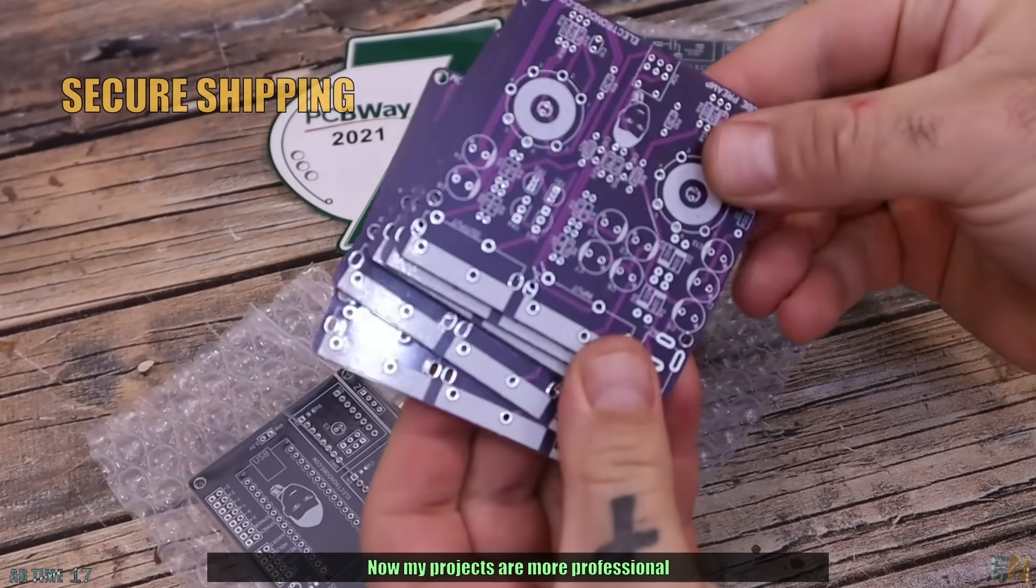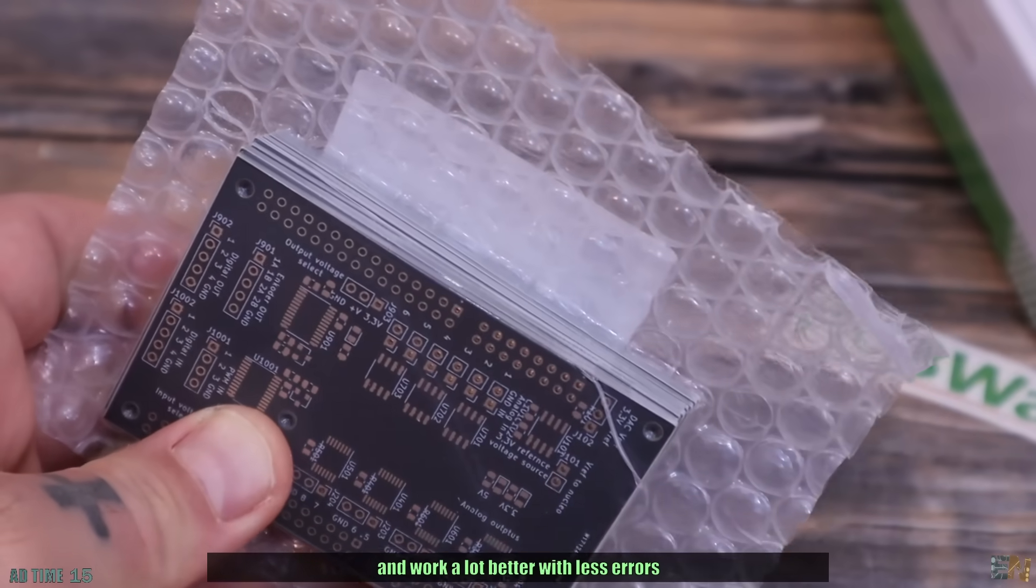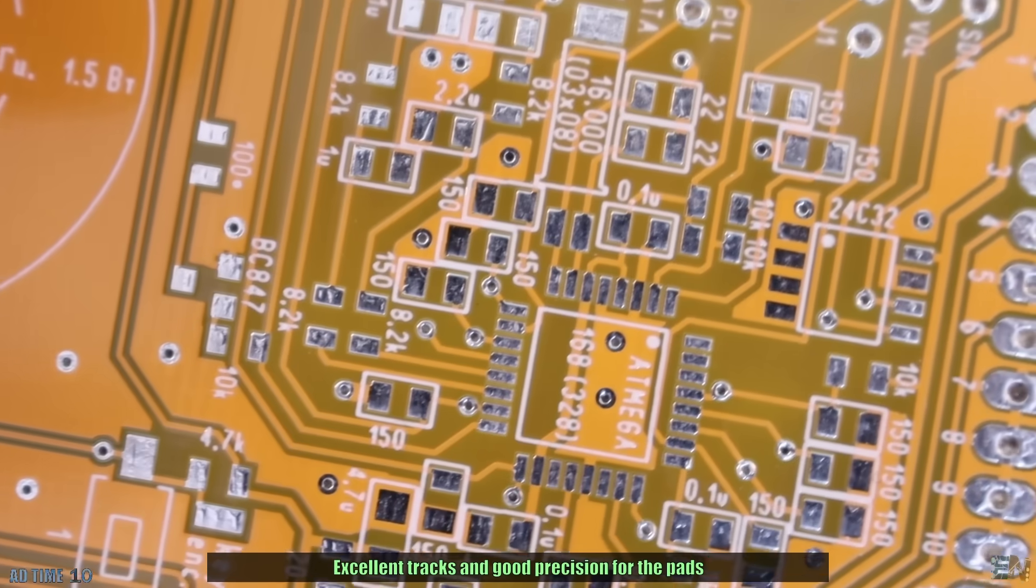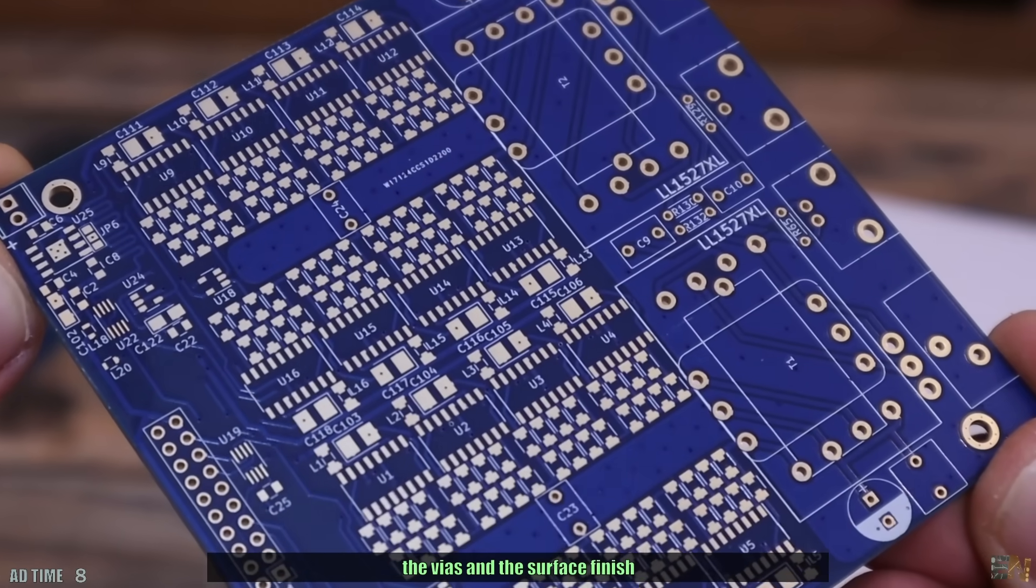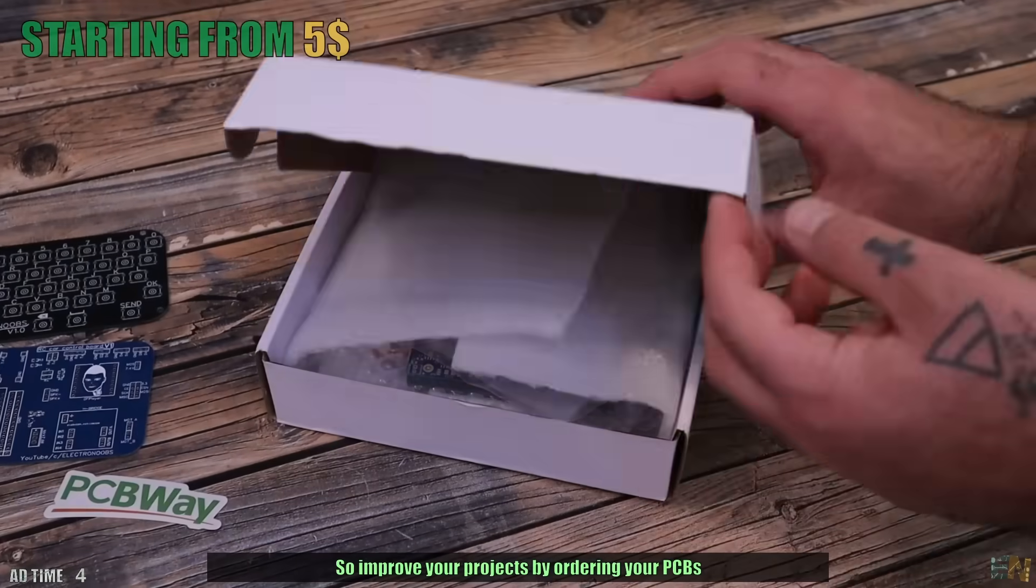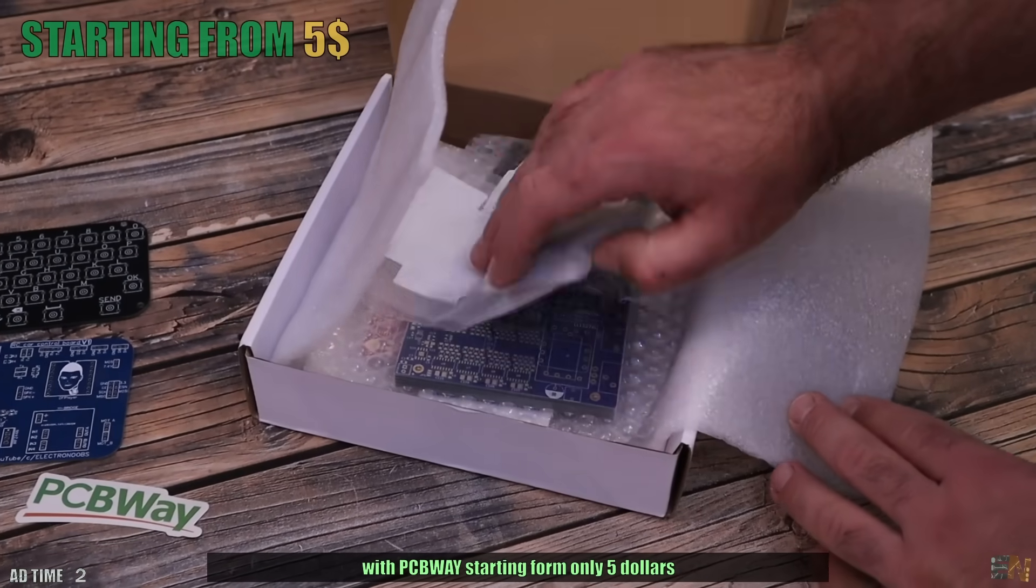Now my projects are more professional and work a lot better with less errors. Excellent tracks and good precision for the pads, the vias and the surface finish. So improve your projects by ordering your PCBs with PCBWay starting from only $5.